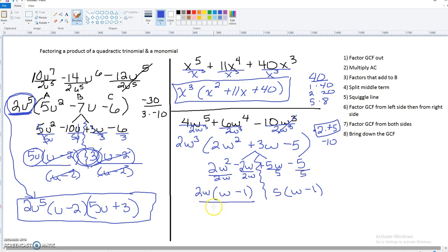So out of both sides, we can take a W minus 1 out. Scratch these out. And in our second set of parentheses, we've got 2W plus 5. And I'll show you where we got those.